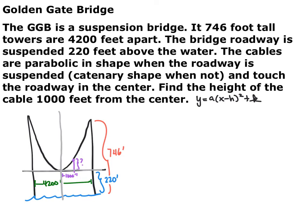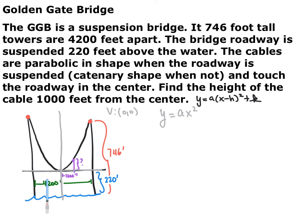With the vertex at the origin, h and k are both 0, so we model this with y = ax². The next thing we use are the points where the cable touches the towers. They tell us the tower height and how far apart the towers are. Now that we've placed the x and y axis with the origin at the center, we can label the tower contact points as coordinate points. Go ahead and pause the video and label those two points.